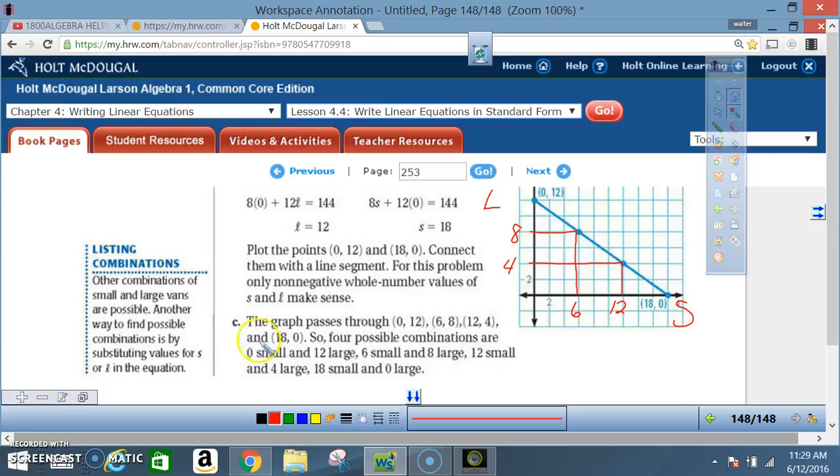So four possible combinations are 0 small and 12 large, 6 small and 8 large, 12 small and 4 large, 18 small and 0 large.